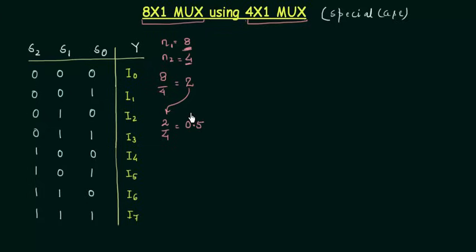It means that all of the inputs of the third 4x1 multiplexer are not used. So this is a problem. We cannot use that method to implement in this case. So what we can do? We are going to use a completely different approach in this implementation.